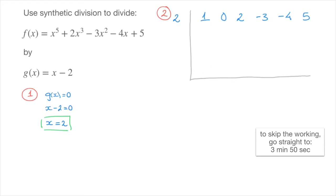We start by carrying down the 1 to the bottom of the table. Then we multiply 1 by the 2 on the left-hand side: 2 times 1 equals 2, which we write at the bottom of the next column. We add this 2 to the coefficient directly above it, which is 0. So 0 plus 2 equals 2, which we write at the bottom of the table. We repeat this process.